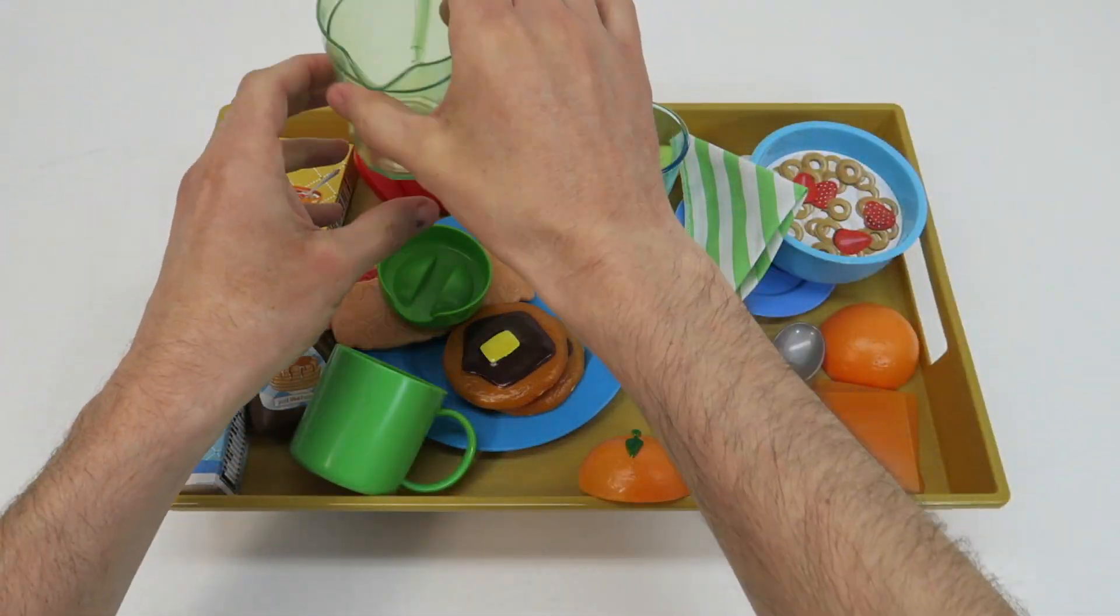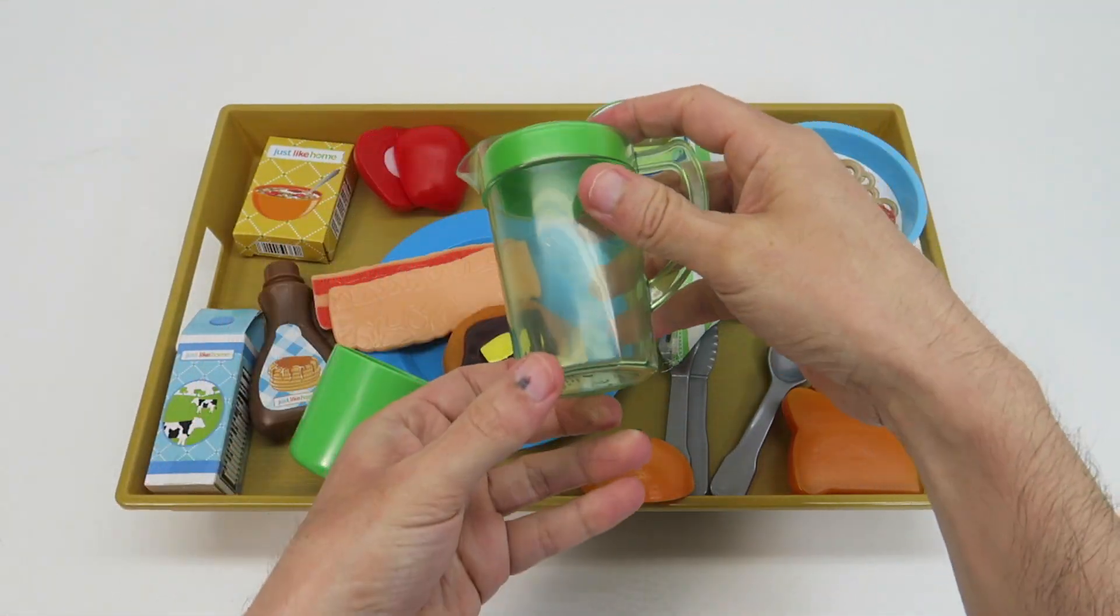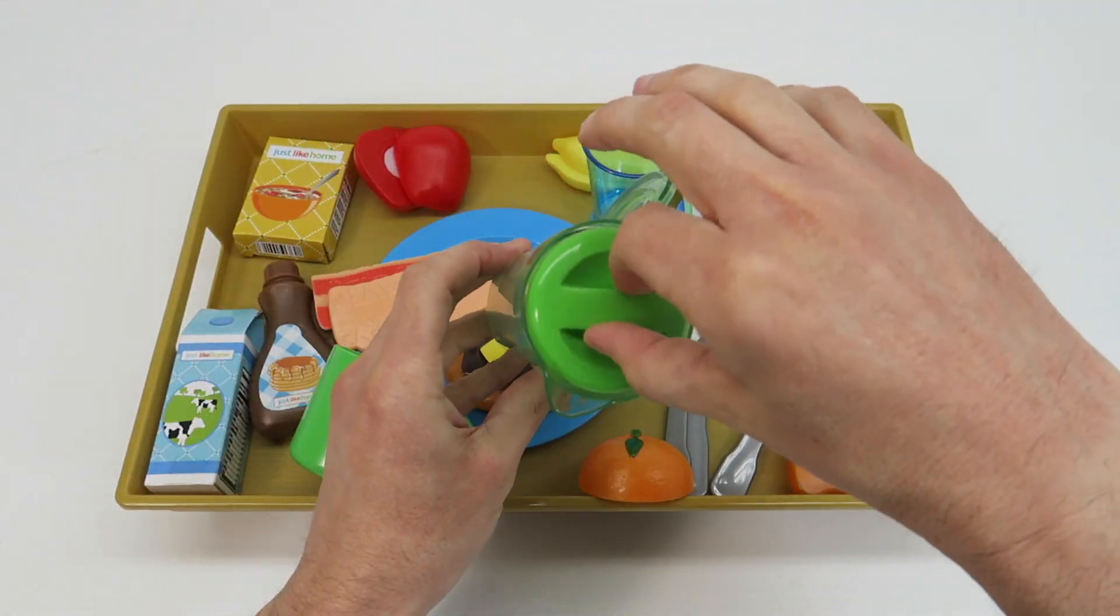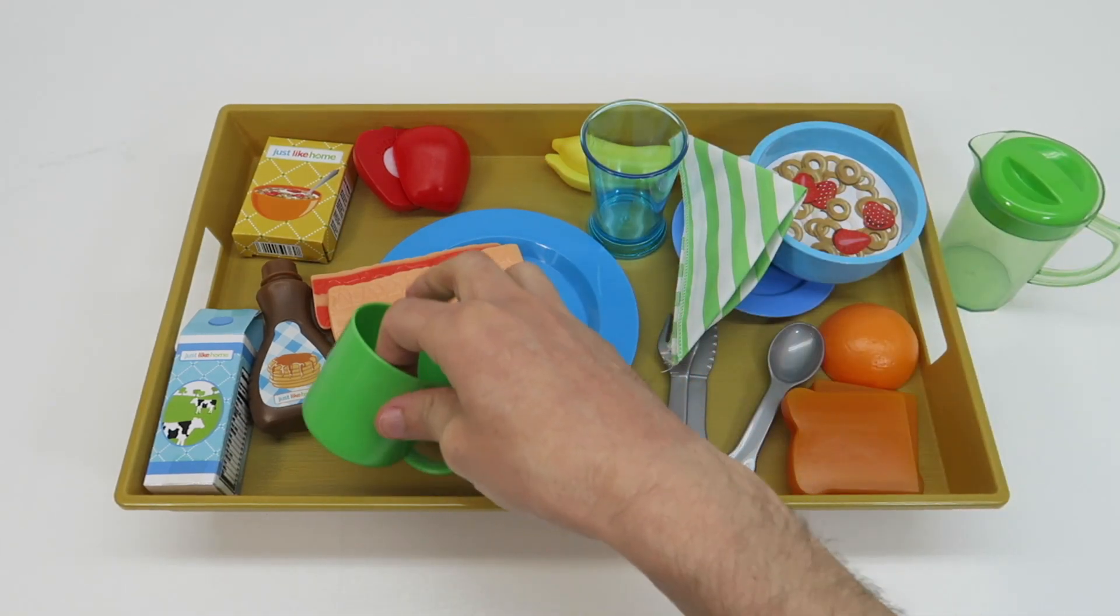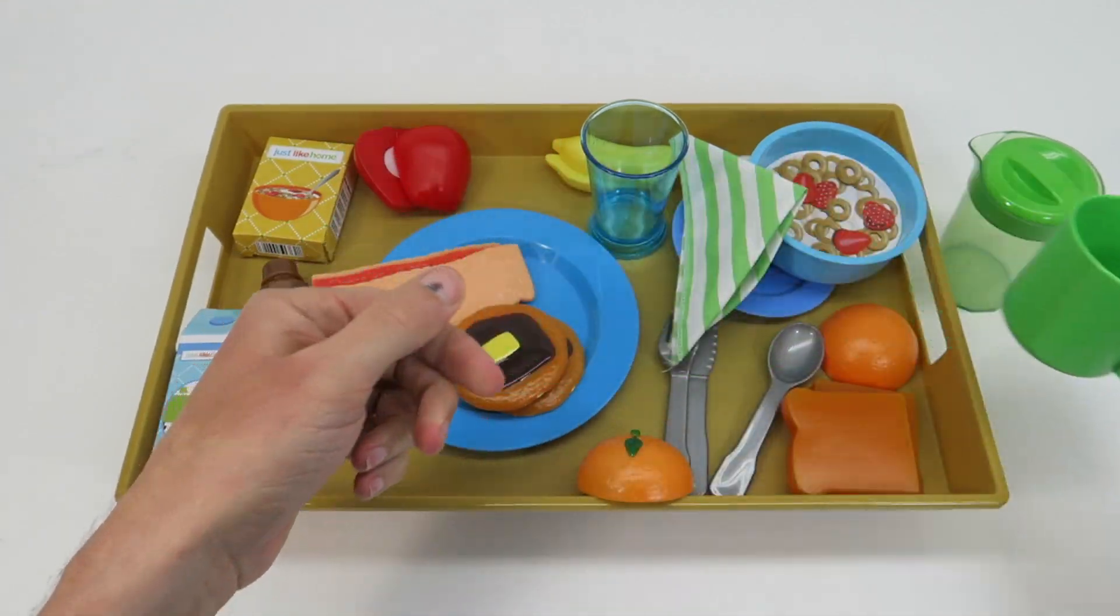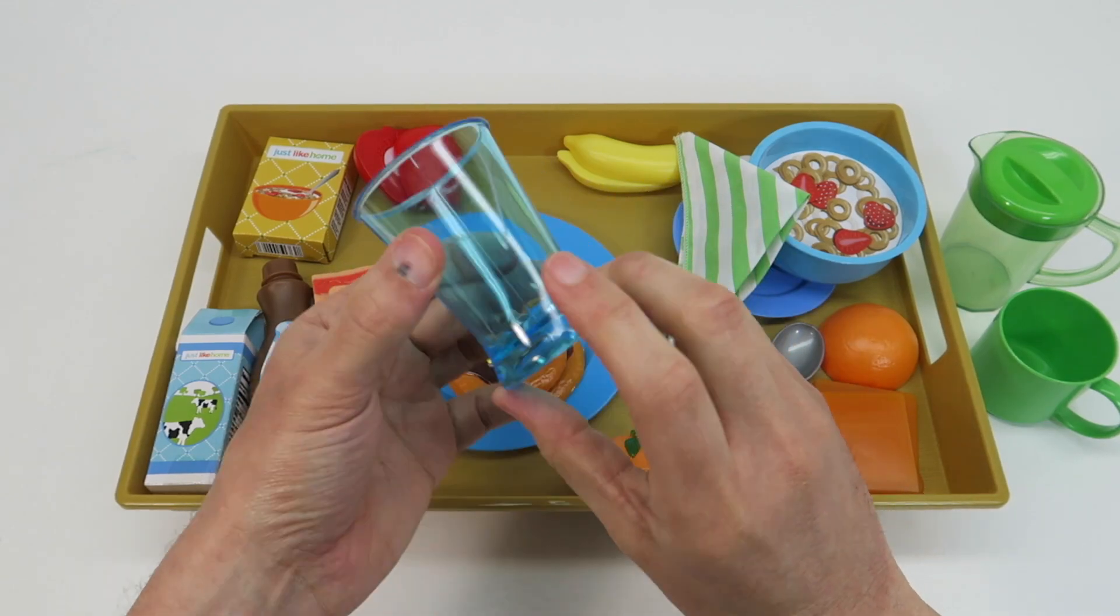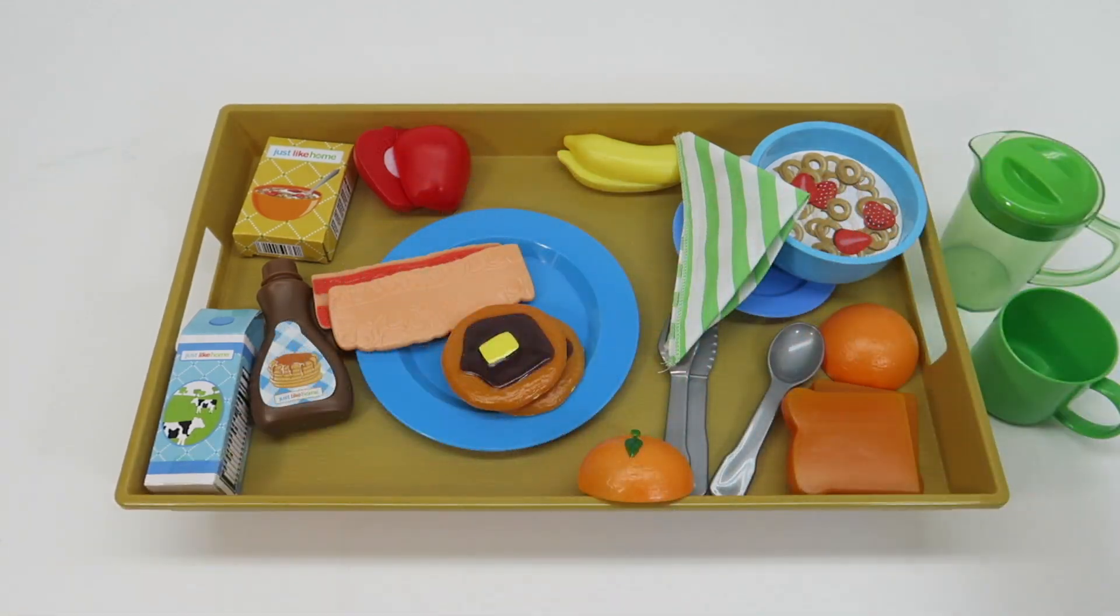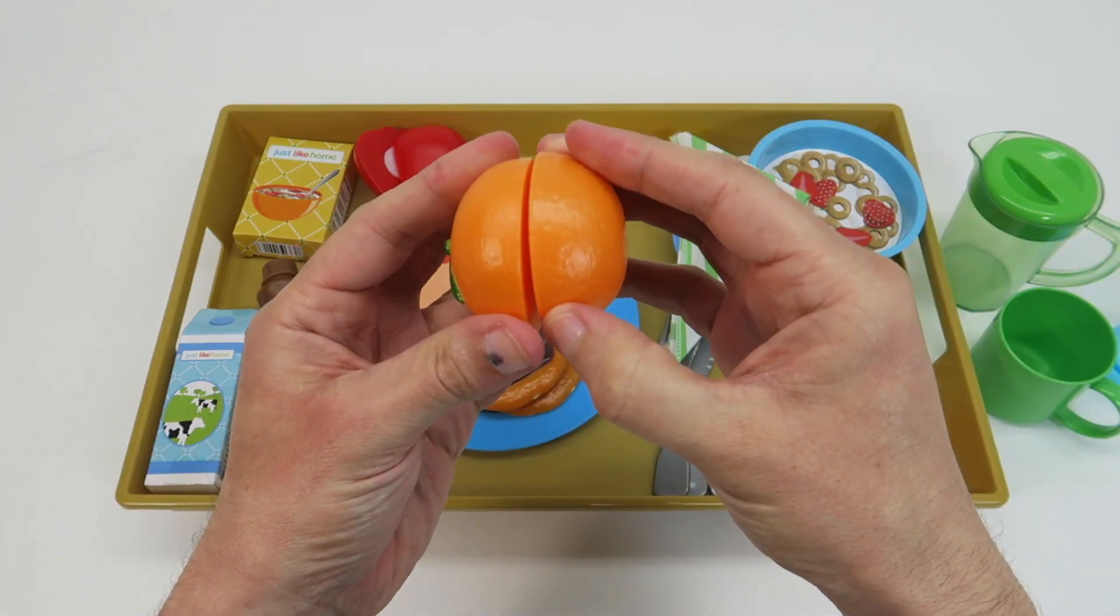Everything is out of the box now. Let's see what it comes with. Comes with this pitcher for juice, this comes out. Comes with a little coffee cup or mug, comes with a juice glass. Putting the juice in, comes with the velcro.